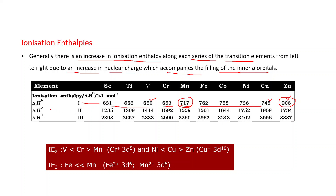For the second ionization enthalpy, it again increases from left to right, but with exceptions. The second ionization enthalpy of chromium is very high compared to vanadium as well as manganese. The reason is that after losing one electron, chromium becomes Cr+, which has a stable 3d5 configuration. So to lose another electron from this stable 3d5 configuration is difficult, hence the second ionization enthalpy of chromium is high.